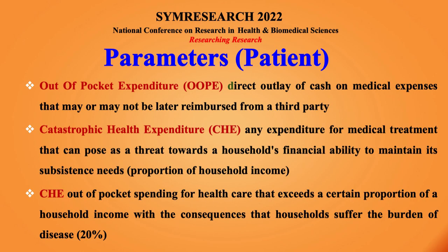There is a need for financial protective measures for patients to be implemented. These are the parameters when we do costing for the patient: out-of-pocket expenditure and another term — catastrophic health expenditure. Out-of-pocket expenditure is when an individual or family spends money from their pocket for health.